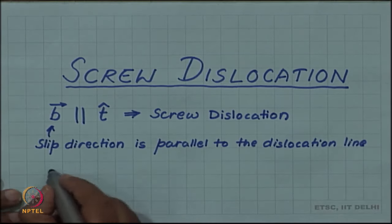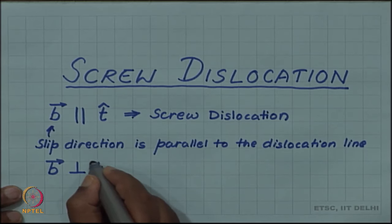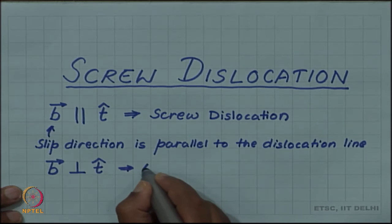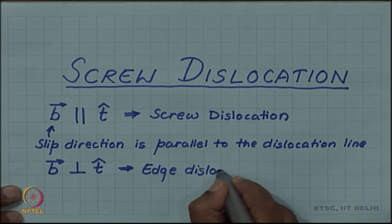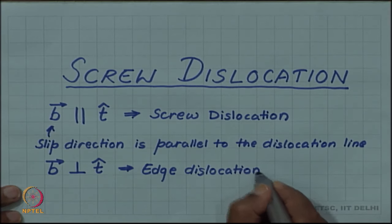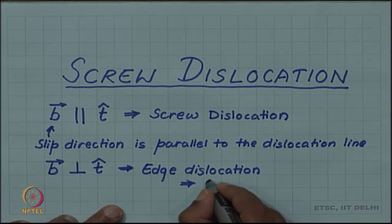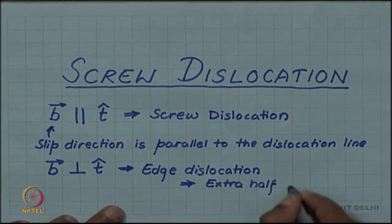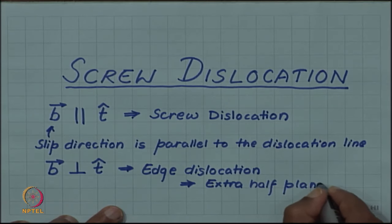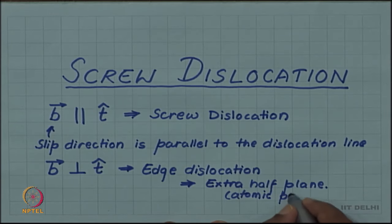We also saw another configuration when the Burgers vector B was perpendicular to the tangent vector t — that gave us edge dislocation. We then saw the atomic model of this edge dislocation, which was an extra half plane. So there is an extra half plane associated with the edge dislocation; this is the atomic picture.